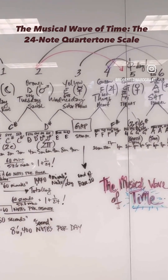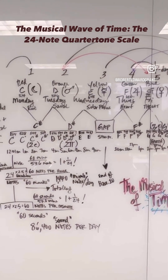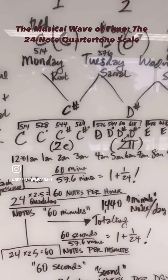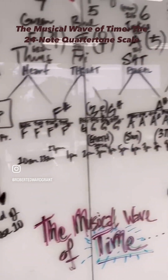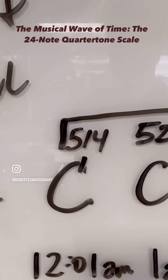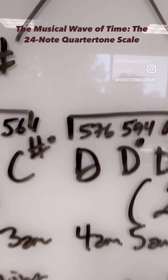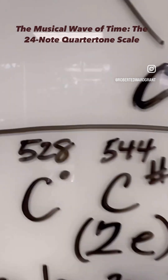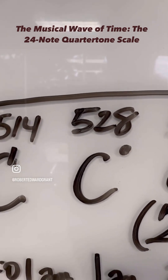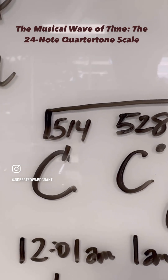What we're actually looking at here is a musical clock, and this musical clock can be derived as follows. Each of these are musical notes, and each of the musical notes on this 24 quarter-tone chromatic scale starts off with a frequency of 514 hertz, then 528, then 544, 561, 576, and 594. These dots are in a quarter-tone arrangement, so 514 is in a 432 hertz precise temperament tuning scale.